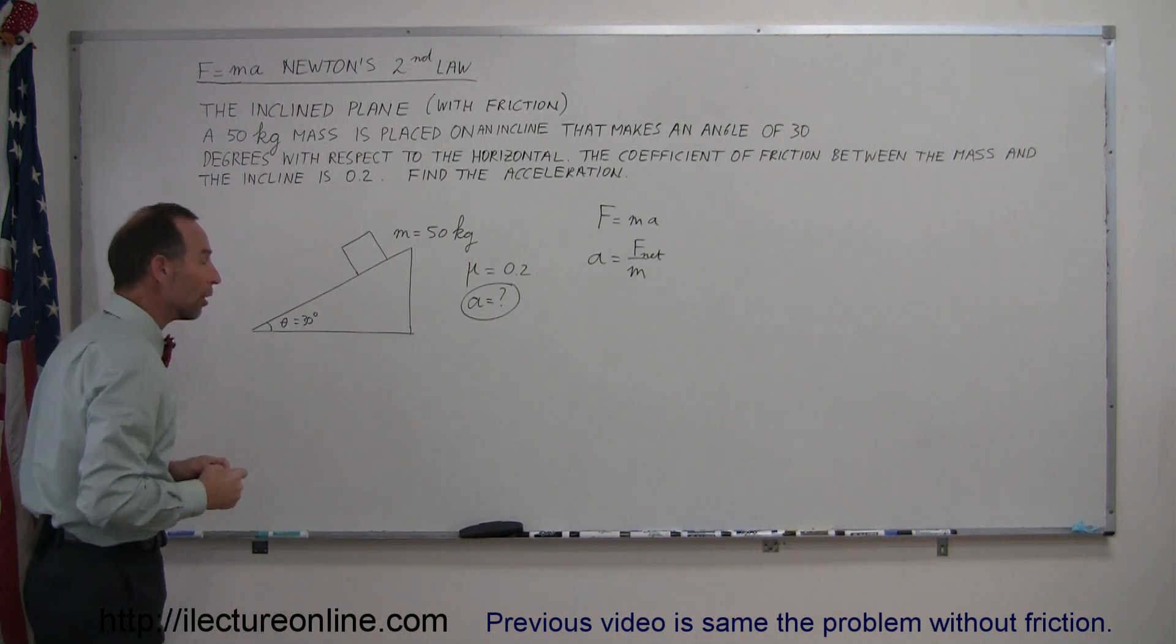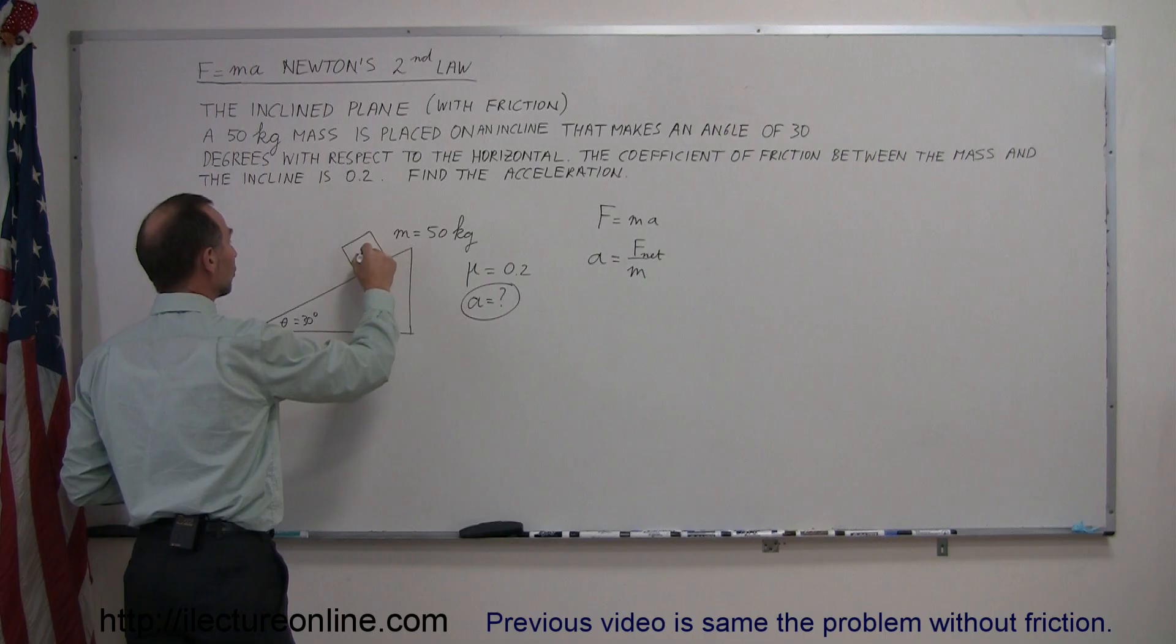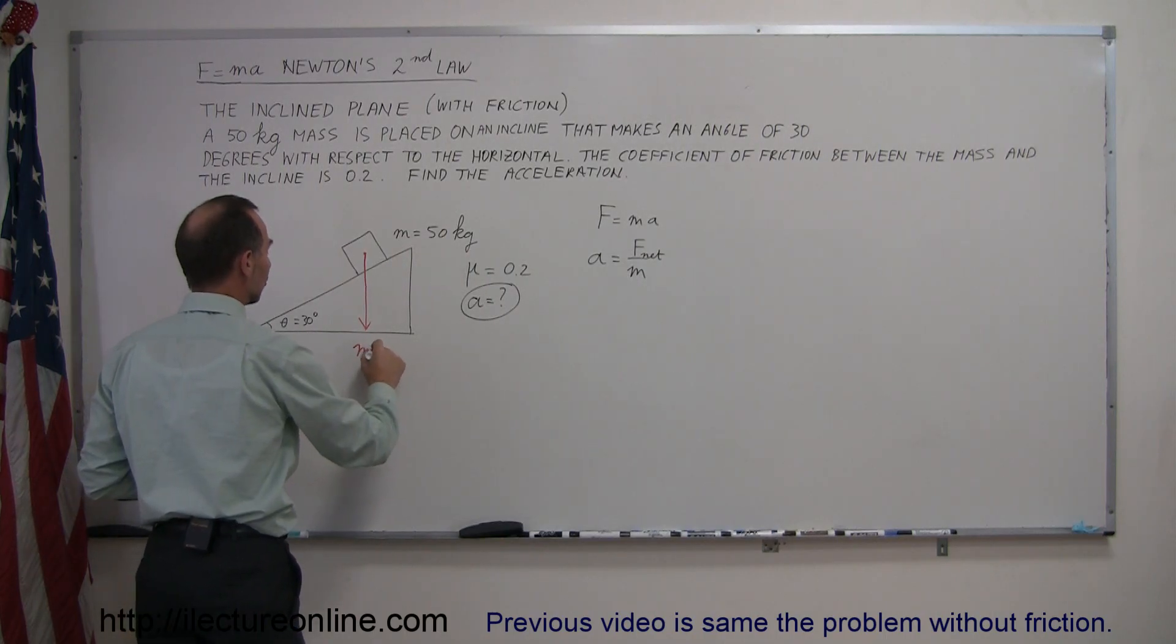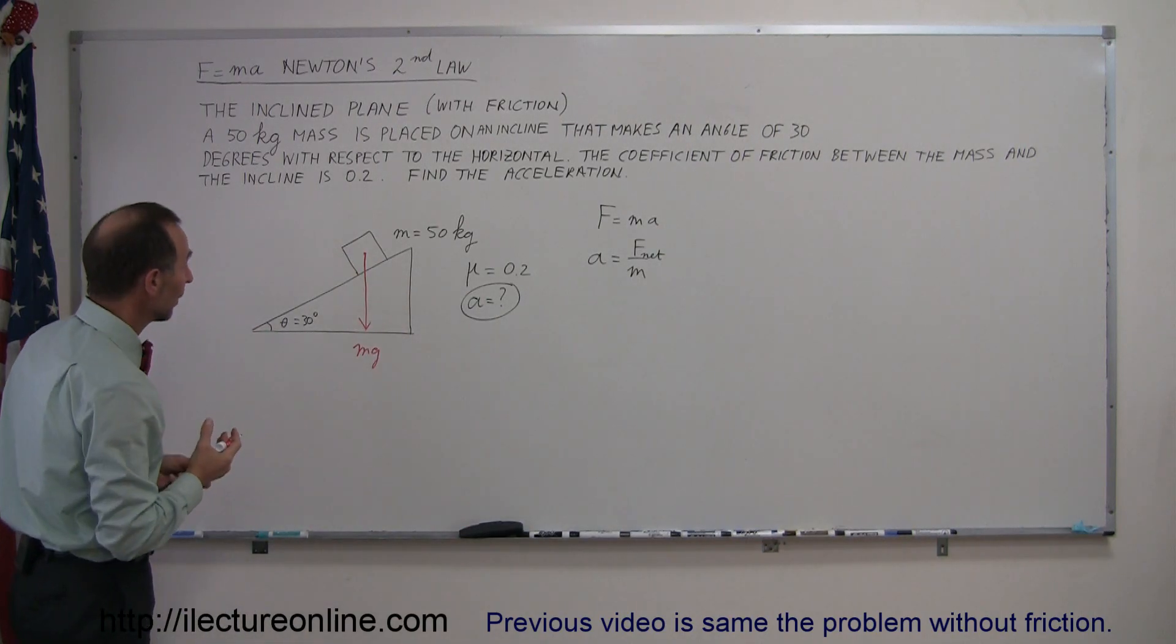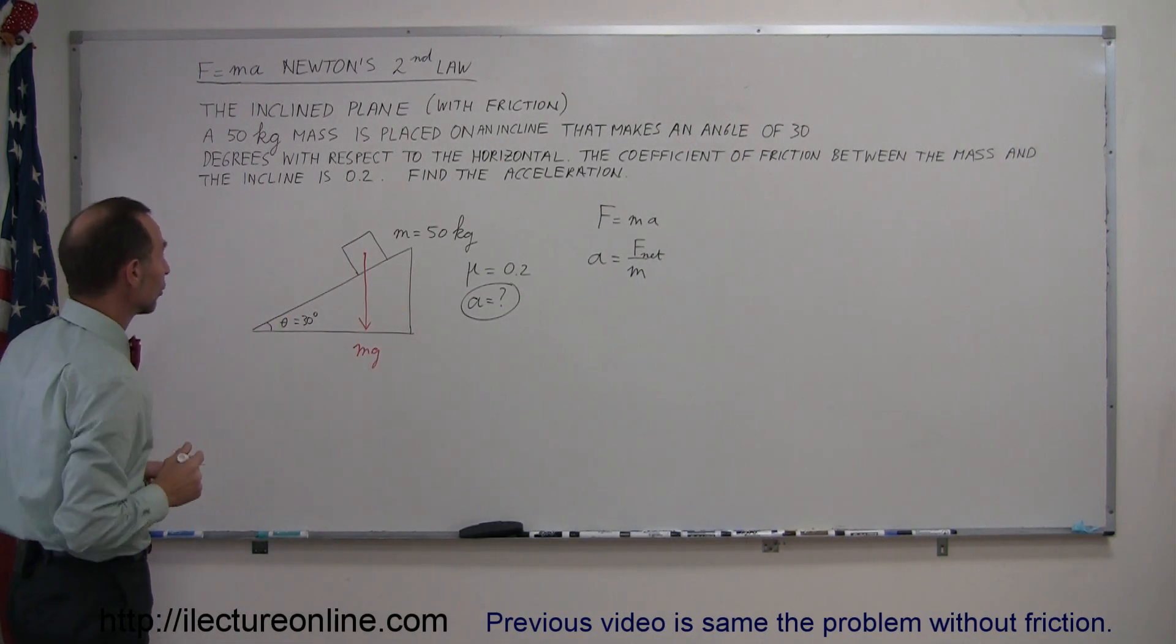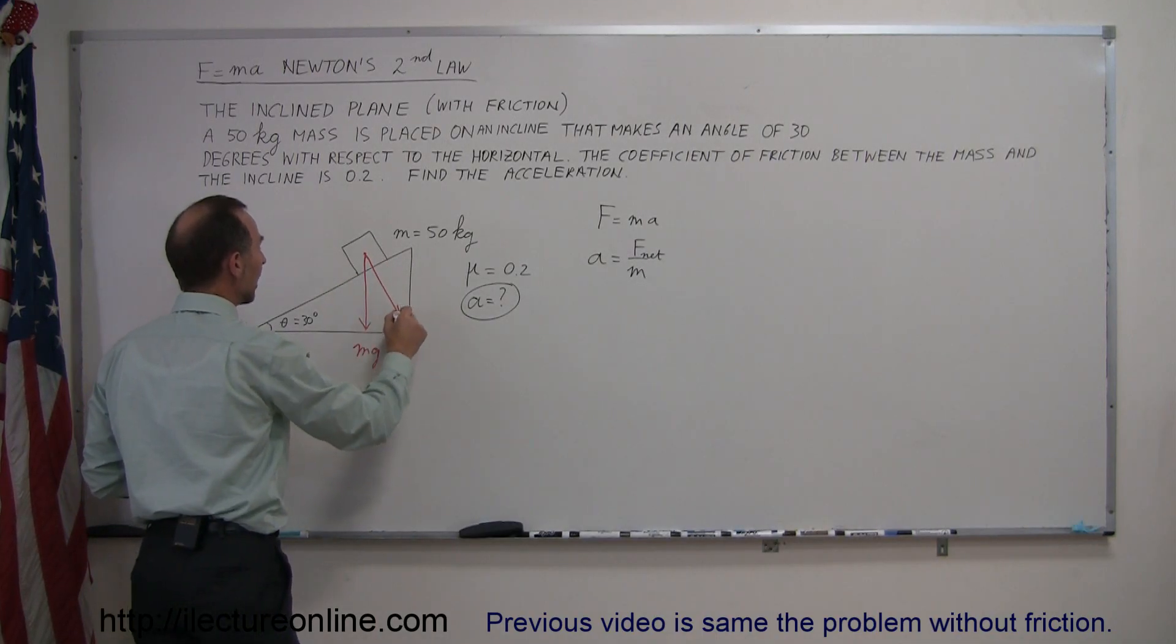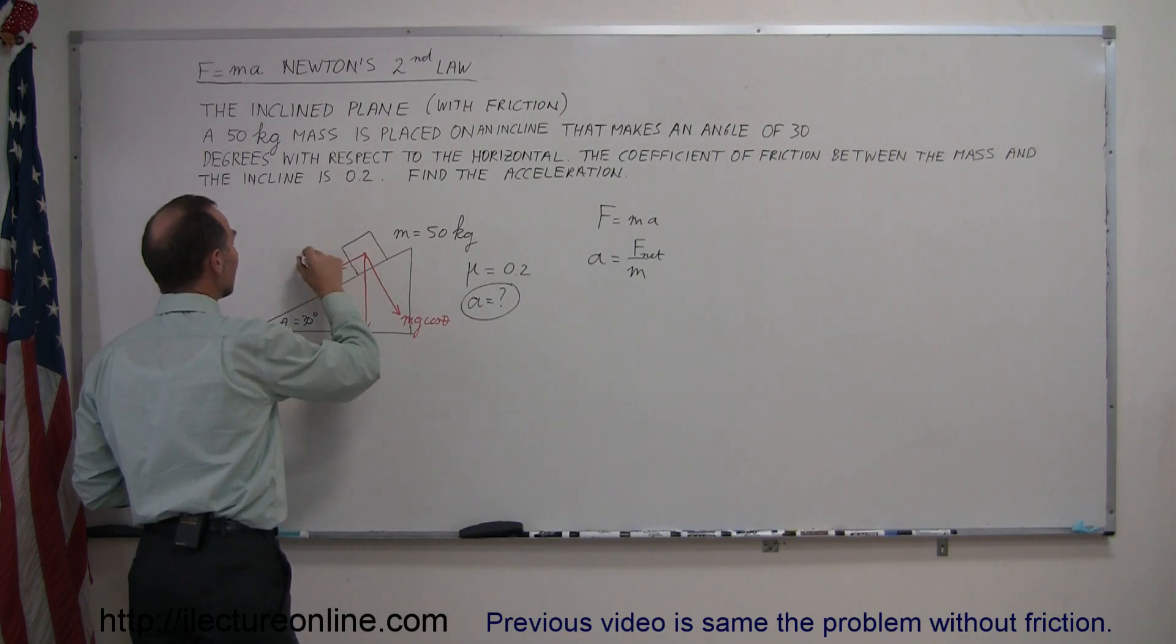All right, to find the net force, we're going to draw all the force vectors, starting out with the force due to gravity, pushing down or pulling down on the mass, which is equal to mg. We then draw the perpendicular and horizontal components of that force. So here is the mg cosine theta, and this would then be the mg sine theta.